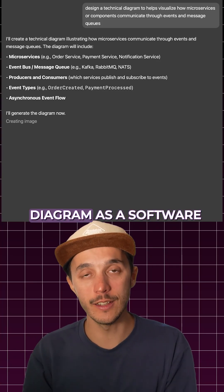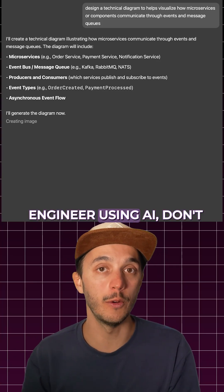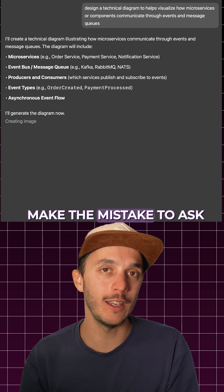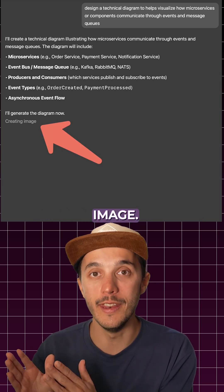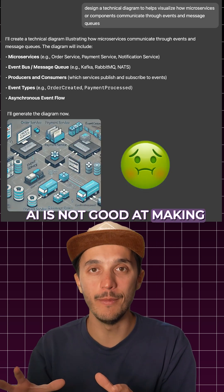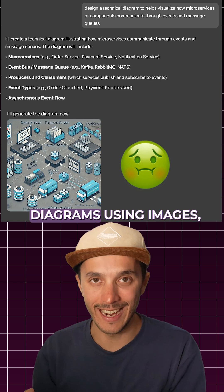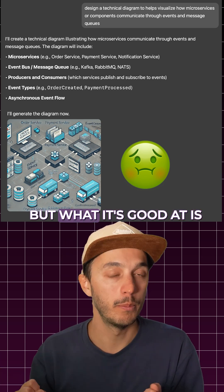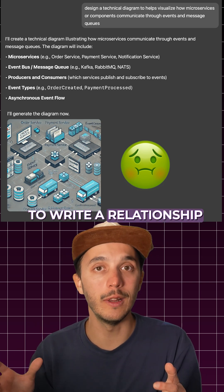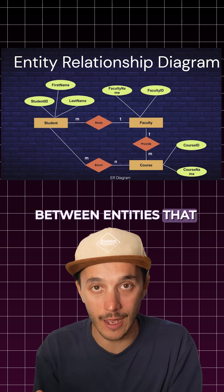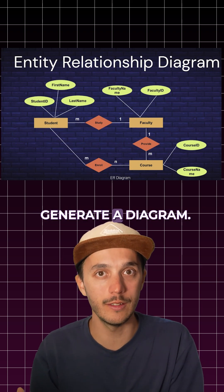If you want to generate technical diagrams as a software engineer using AI, don't make the mistake of asking it to generate an image. AI is not good at making clear and sober diagrams using images, but what it's good at is writing the relationships between entities that will be needed to generate a diagram.